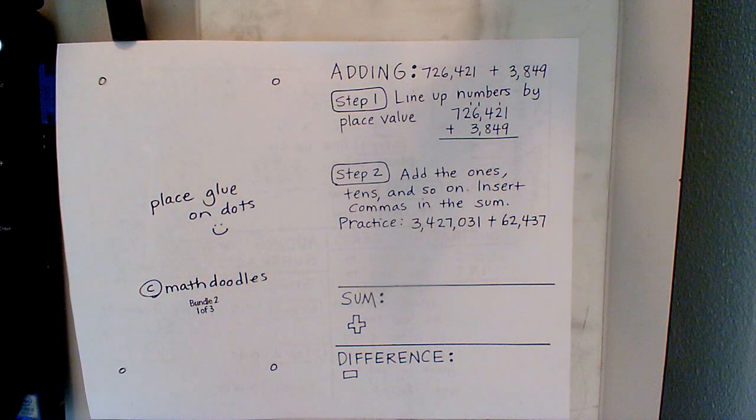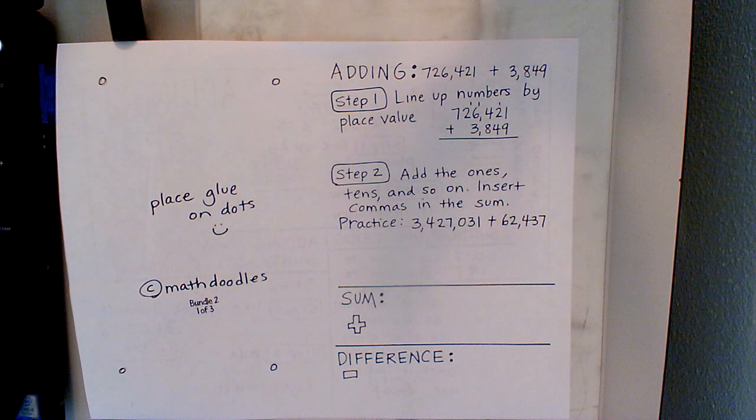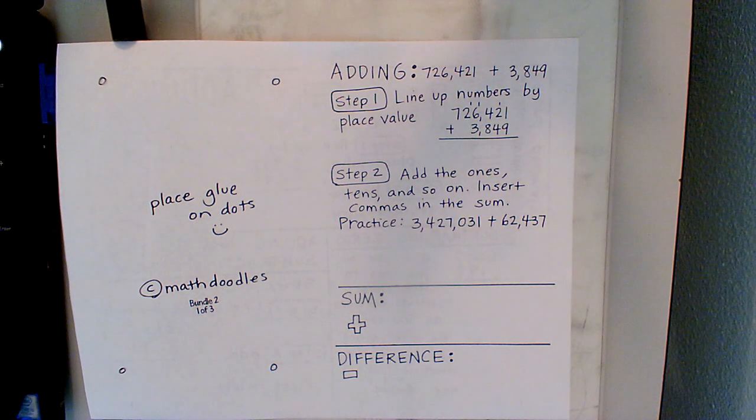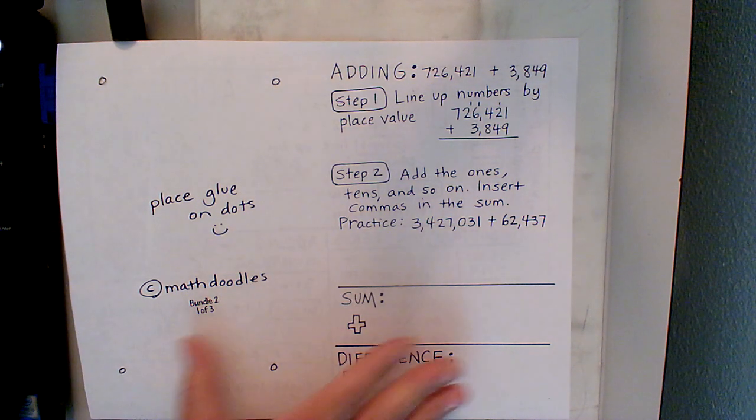Okay, so step one is to line up your numbers by place value. This is where that grid paper that Miss Hodges keeps up there and that organizer up there comes in very handy. You want to keep your place values lined up so that you're not adding the wrong numbers in the wrong column.